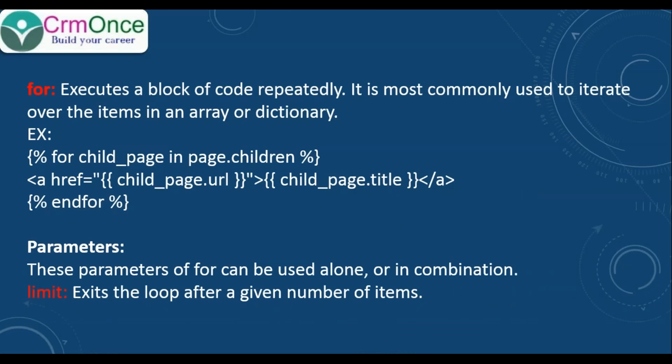The first iteration tag is 'for'. For executes a block of code repeatedly. It is most commonly used to iterate over the items in an array or in a dictionary. For example, in the below code...